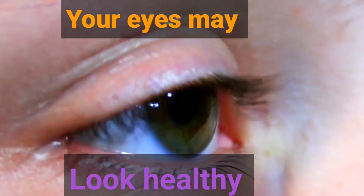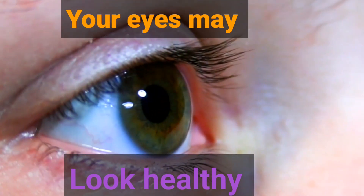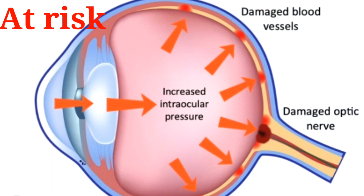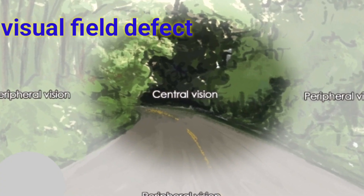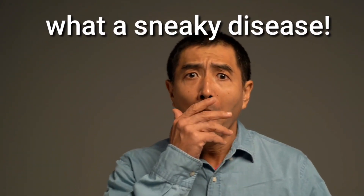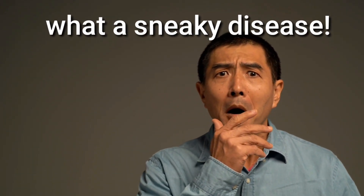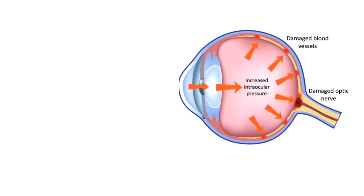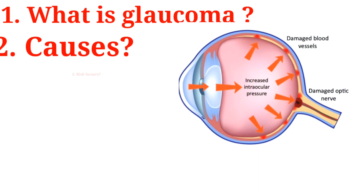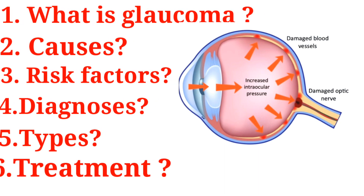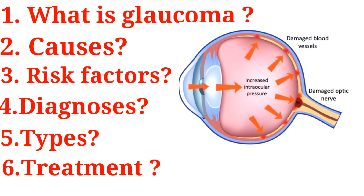Your eyes may look healthy in the beginning, not knowing that you are at risk of the disease until later when you start experiencing visual field defect or gradual visual loss. What acute disease is this? This is nothing but glaucoma. So what is glaucoma? What causes it? Its risk factors, diagnosis, types, and treatments? Let's find out.